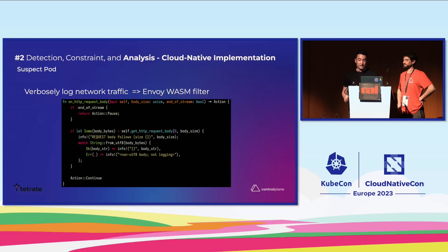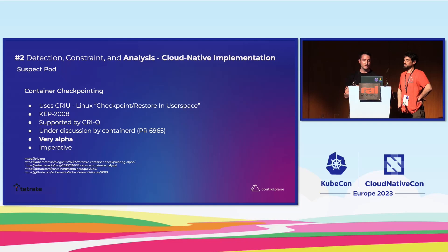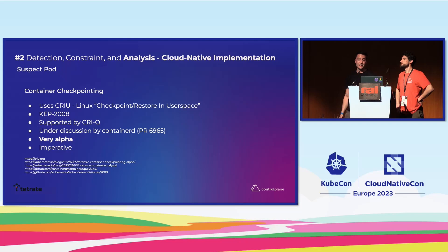For container checkpointing, Linux has had the CRIU checkpoint-restore in user space capability for a while, and it apparently works fairly well. However, Kubernetes support is still very limited — there's a KEP out there, CRIU supports it, but ContainerD is still discussing it on a PR. There's just an imperative API on the runtime itself that Kubernetes doesn't even expose yet. Very alpha, but it's coming.